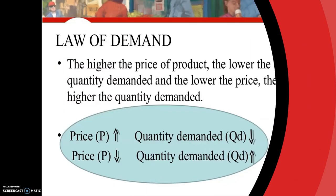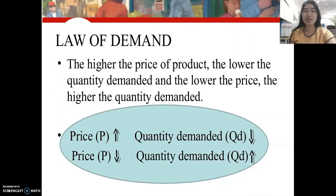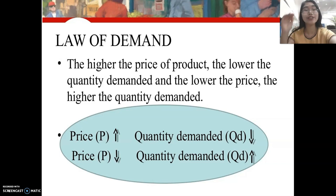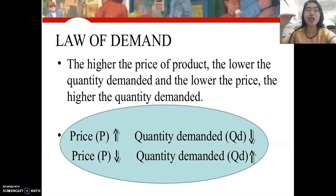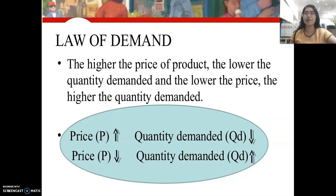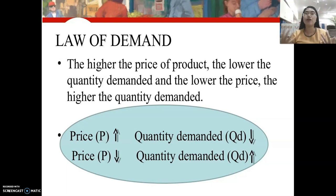The law of demand states: the higher the price of a product, the lower the quantity demanded; and the lower the price, the higher the quantity demanded. This means if the price goes up, the quantity demanded of a good will go down. Conversely, if the price goes down, the quantity demanded of a good will go up, ceteris paribus.